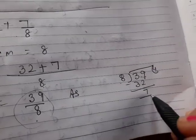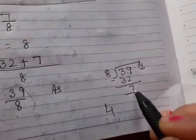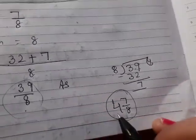So the mixed fraction: quotient is 4, remainder is 7, and the divisor is 8. That is 4 and 7/8. That is your answer.